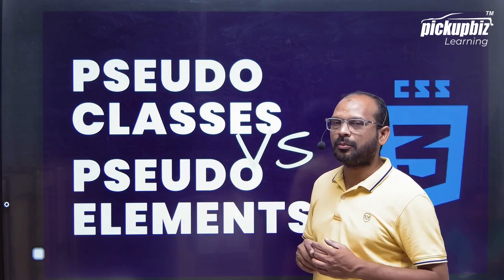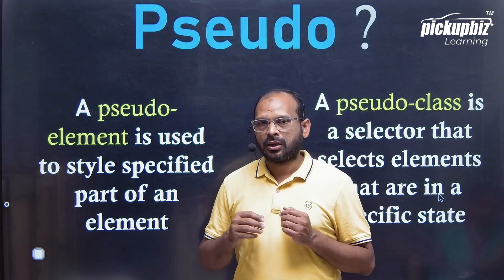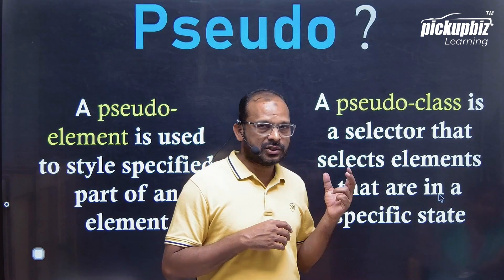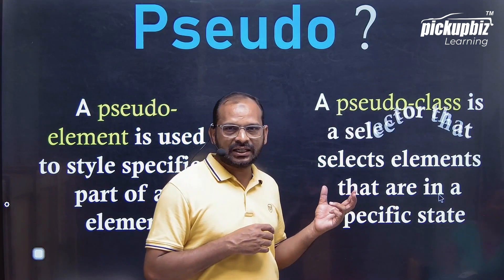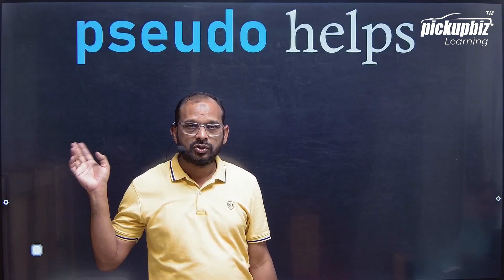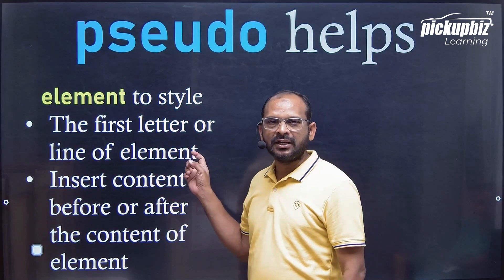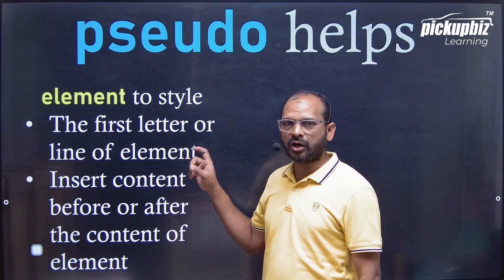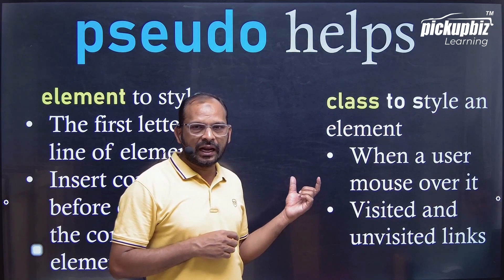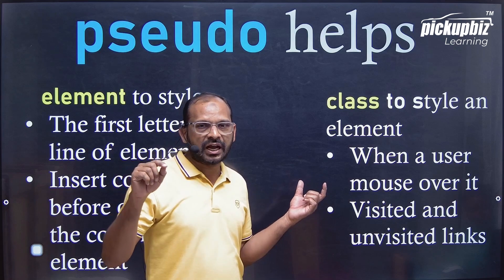Hello everyone. Today we will discuss pseudo classes and pseudo elements. A pseudo element is used to style a specified part of an element. A pseudo class is a selector that selects elements that are in a specific state. Pseudo elements help to style the first letter or line of content, and insert content before or after the content of an element. Pseudo classes help to style an element when a user mouses over it, or visits an unvisited link.